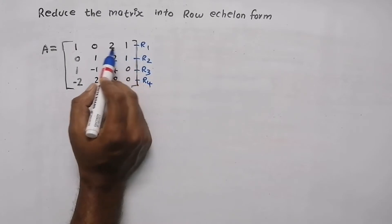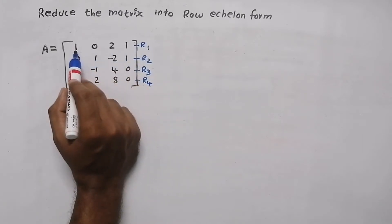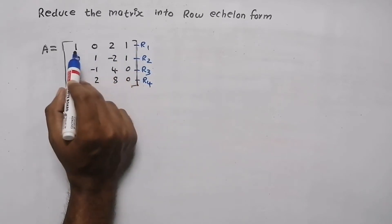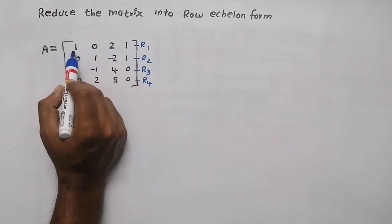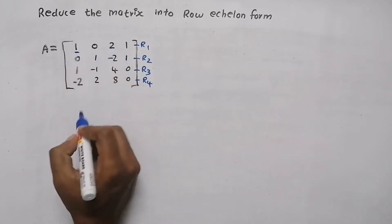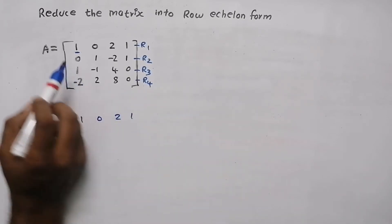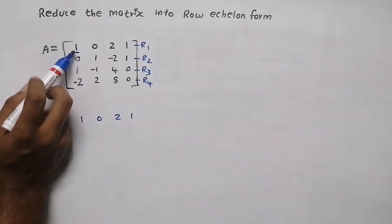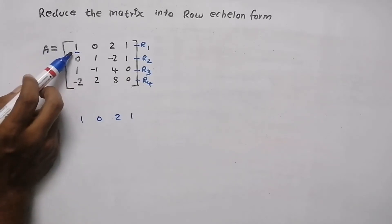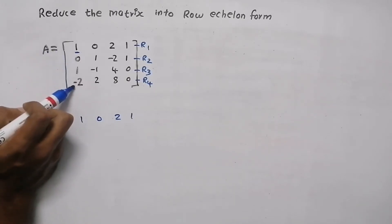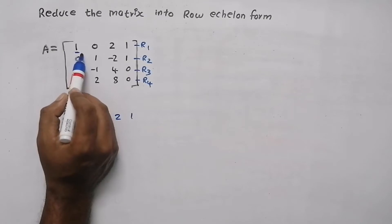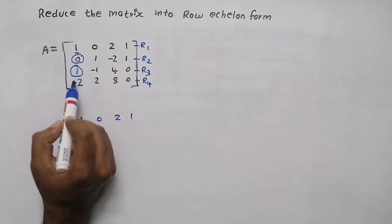In the first row, the first element should always be equal to 1. We will name it as the leading element. The first row's first element should always be equal to 1. In this question it is already 1, so we can write that row as: 1, 0, 2, 1. This is our leading element in the first row. All the elements under that leading element should be 0 — that means this element, this element, and this element should all be 0.